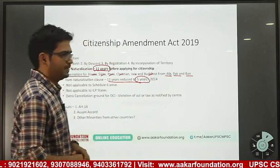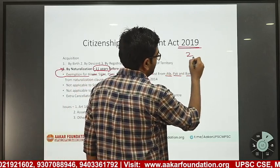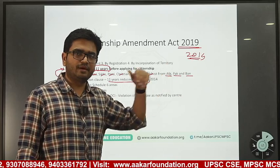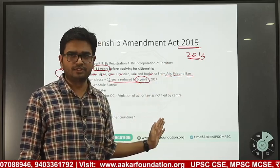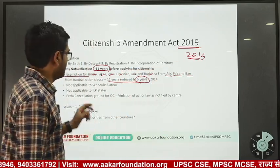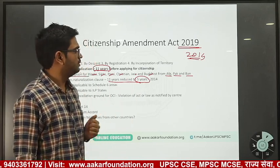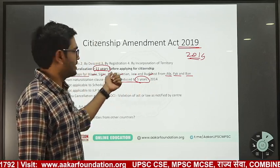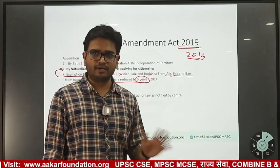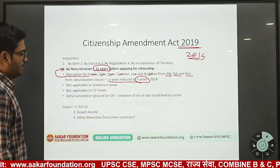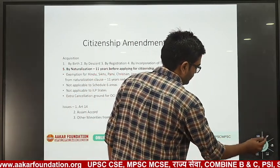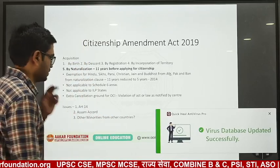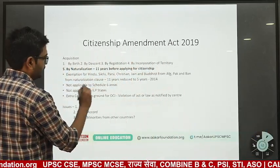For these people, the residency requirement has been reduced to only five years before applying for citizenship. The cutoff date is December 2014 — meaning people of these six religions from these three countries who arrived in India before this date are not eligible; they must have come after this date. They need to stay in India for only five years before applying. So, for example, a Parsi arriving from Afghanistan in 2020 can now apply for citizenship.